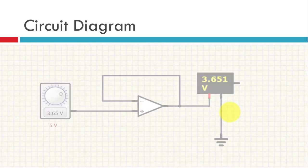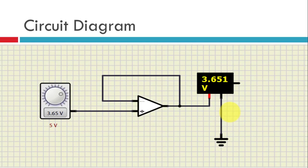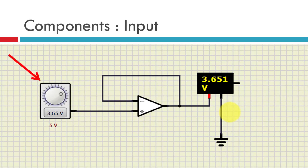So this is the circuit diagram we will be doing on Samuel IDE. I will explain the components. This is the input DC source we are using as the input. So we can vary the input voltage from 0V to 5V.